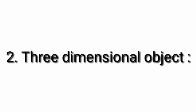Second: three-dimensional object. An object having three dimensions such as length, width, and height or thickness is called a three-dimensional object. The product of length, width, and height of three-dimensional objects provides their volume.